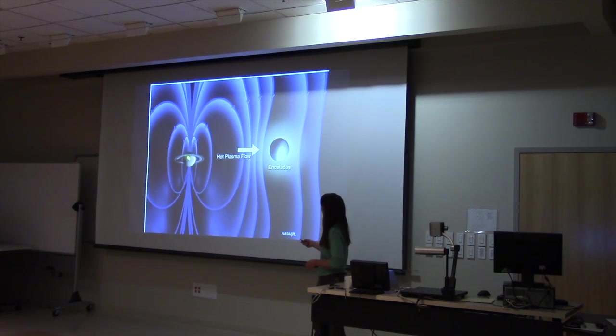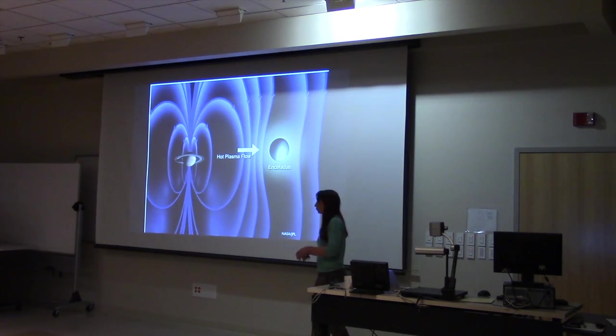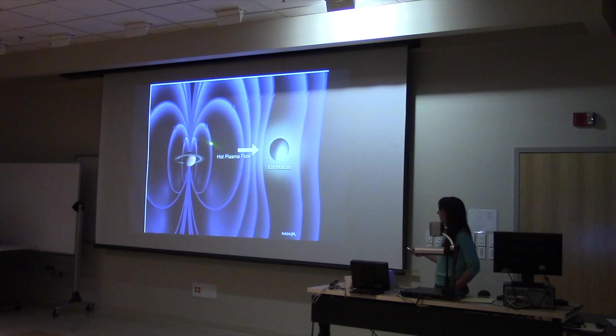When Cassini flew by Enceladus, this is a picture of Saturn. And these purple lines are magnetic fields. So Saturn has a global magnetic field just like the Earth. And moons like Enceladus perturb that magnetic field. But the perturbation of the magnetic field is stronger if the moons have some sort of atmosphere around them.